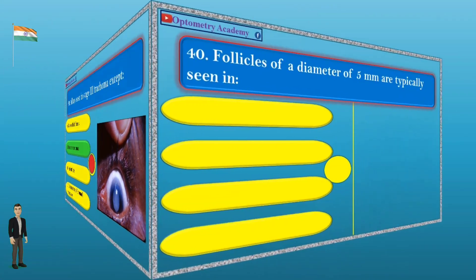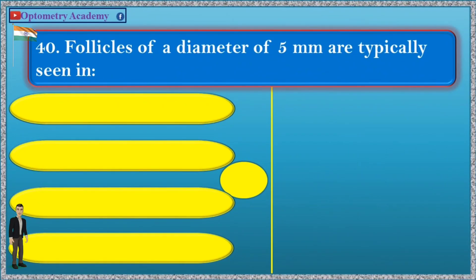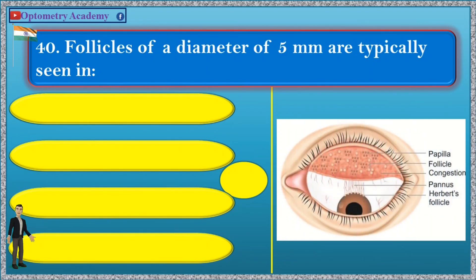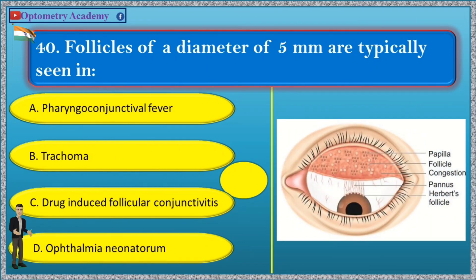Question 40. Follicles of a diameter of 5 millimeters are typically seen in: A. Pharyngoconjunctival fever, B. Trachoma, C. Drug-induced follicular conjunctivitis, D. Ophthalmia neonatorum.